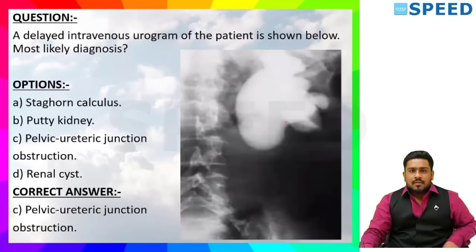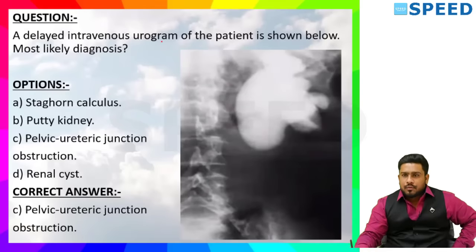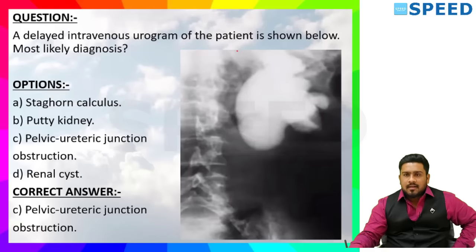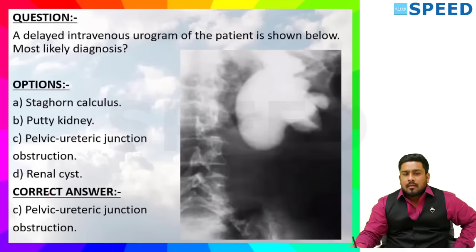Next question: A delayed intravenous urogram of the patient is shown below. Most likely diagnosis? Options: staghorn calculus, putty kidney, pelvi-ureteric junction obstruction, renal cyst.